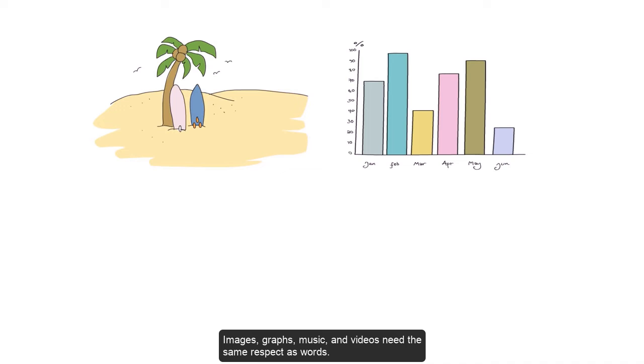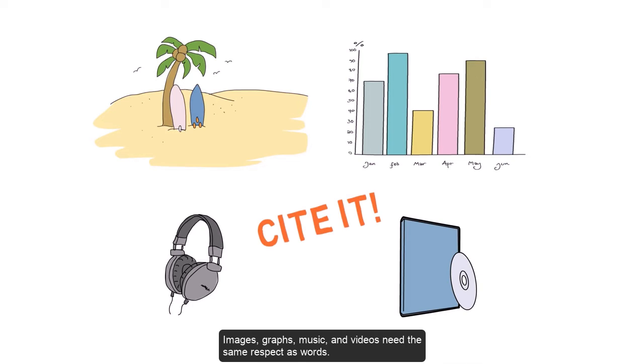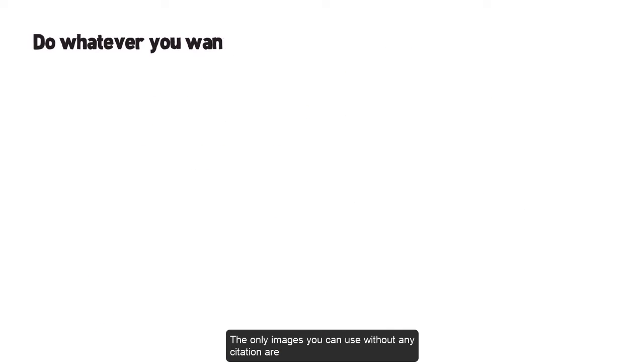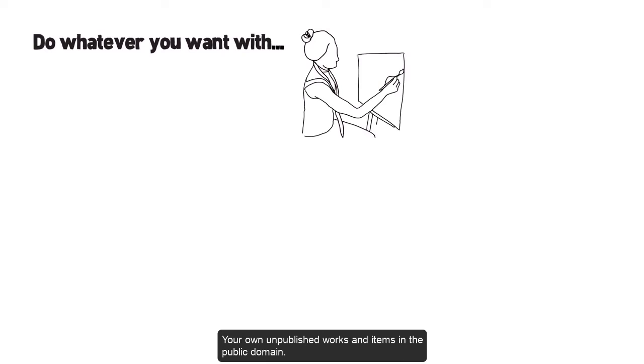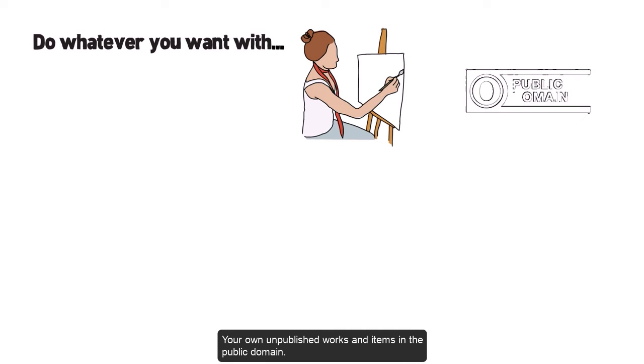Images, graphs, music, and videos need the same respect as words. The only images you can use without any citation are your own unpublished works and items in the public domain.